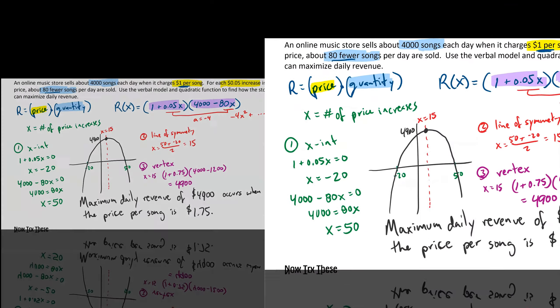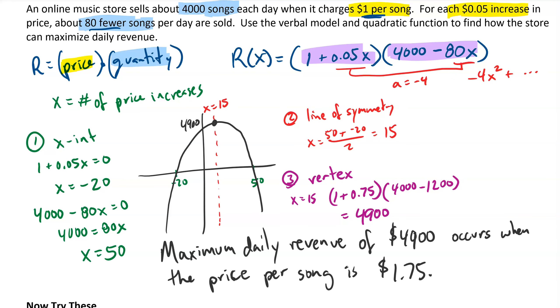Overall, the idea here is we can use some given information to build an expression that represents price and quantity. Multiplying those two expressions gives me a quadratic model for revenue, and we can analyze that quadratic function to identify maximum daily revenue.